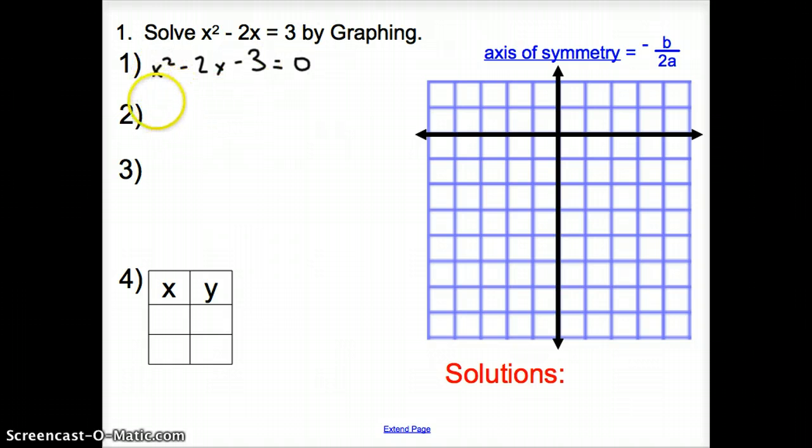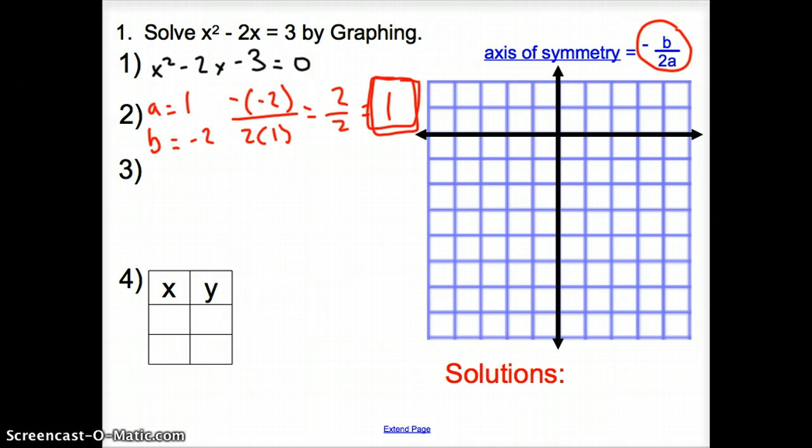How did we graph something like this? Well, we found our a, which is 1, our b, which is negative 2, and then plug them in for our axis of symmetry. So we went negative and then a negative 2 all over 2 times 1, which gives us a now positive 2 over 2, which is 1. So our axis of symmetry is a positive 1. So I'm going to go ahead and put that axis of symmetry down right at 1, and there's my axis of symmetry, that red line.